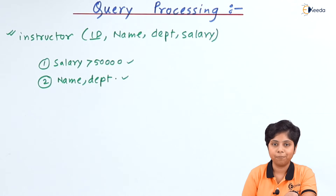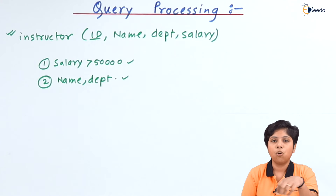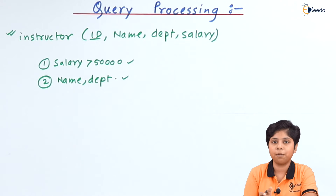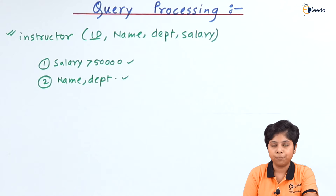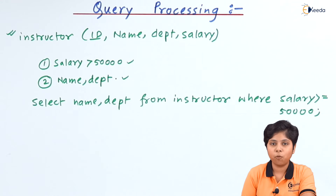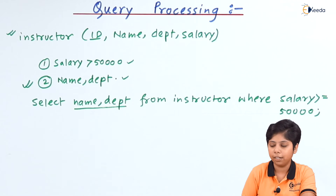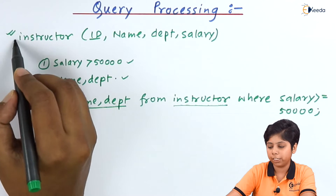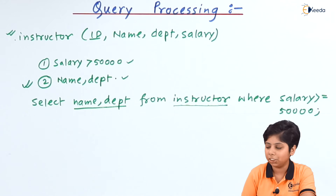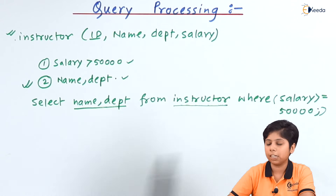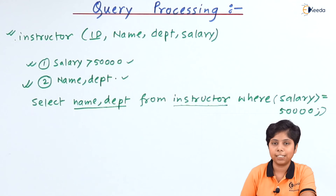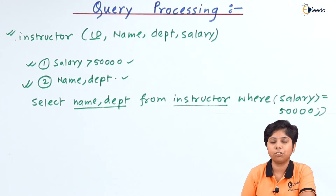To build a query we can use SQL or any other query language that can be declarative or procedural. Using SQL we can build a query like: SELECT the attribute name — the second condition — FROM instructor — meaning it fetches values from the instructor relation — WHERE that suggests the condition.